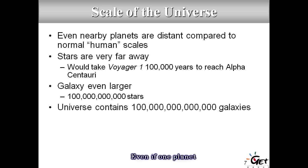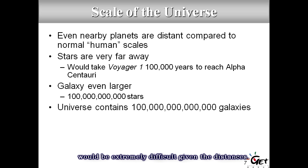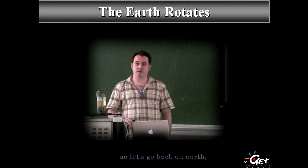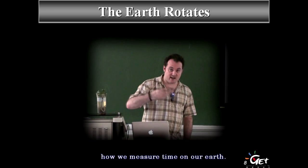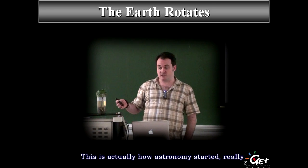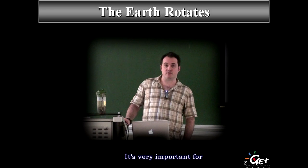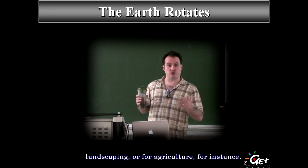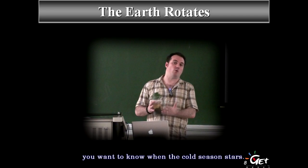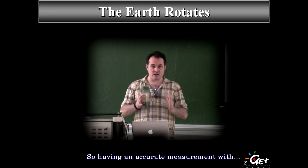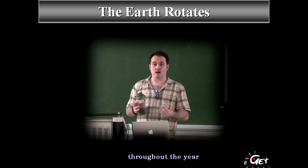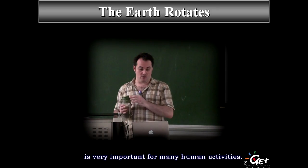Even the closest stars are very far away. Even if one planet has sustained life somewhere, communicating with it is extremely difficult given the distances, and the chance that a planet is habitable is very small. So let's go back to Earth. Let's start describing how we measure time — not only important for astronomers, but this is actually how astronomy starts. It's important for agriculture, for instance: you want to know when winter starts, when to plant your seeds.